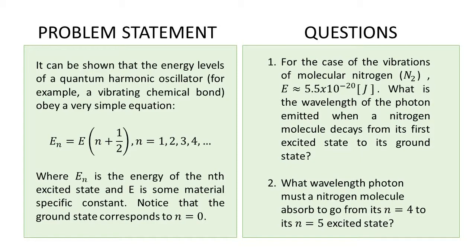For the case of the vibrations of molecular nitrogen N₂, the energy E is approximately 5.5 × 10⁻²⁰ joules. What is the wavelength of the photon emitted when a nitrogen molecule decays from its first excited state to its ground state? The second question is, what wavelength photon must the nitrogen molecule absorb to go from n = 4 to its n = 5 excited state?